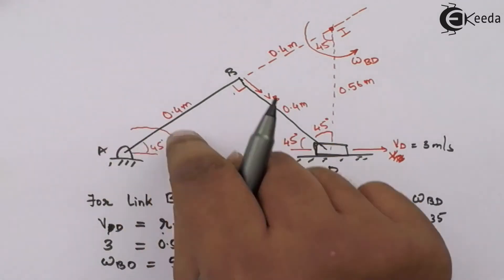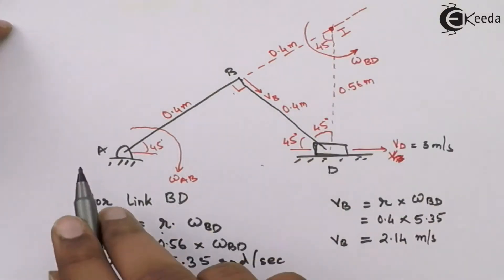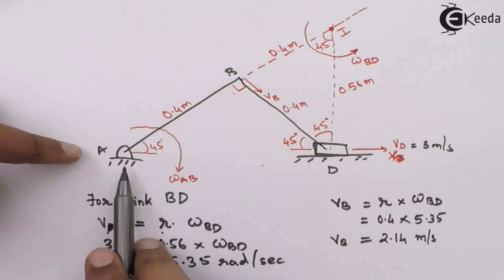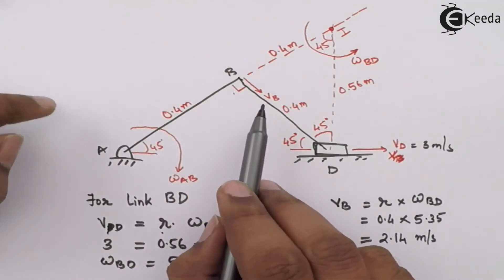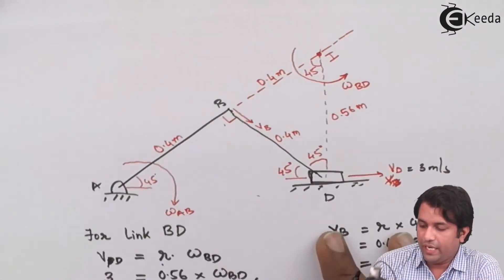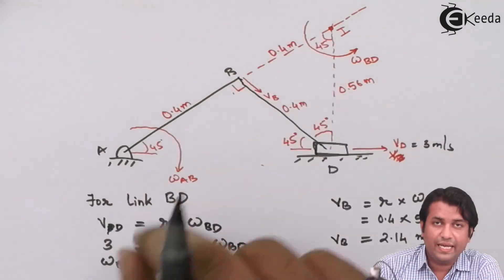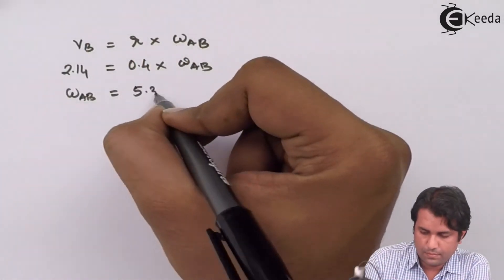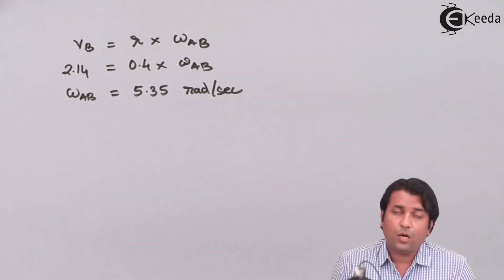The next step is to find the angular velocity of link AB. Since VB is going in this direction due to link AB rotating in the clockwise direction, I can say VB = AB × omega AB. VB is 2.14 meters per second and the length of link AB is 0.4 meters. So omega AB also comes out as 5.35 radians per second.